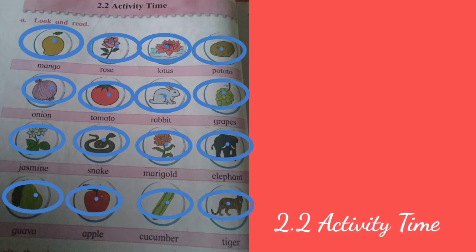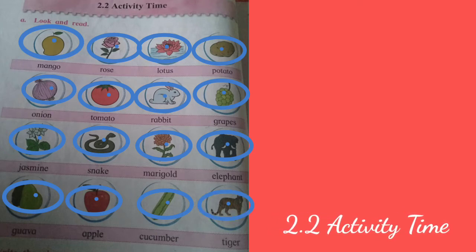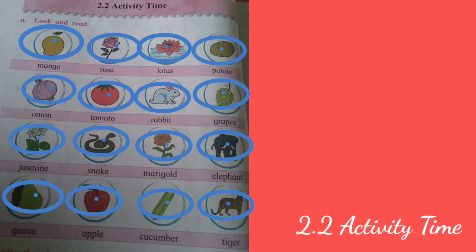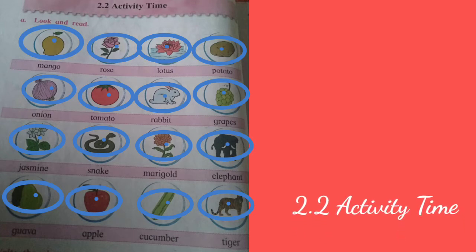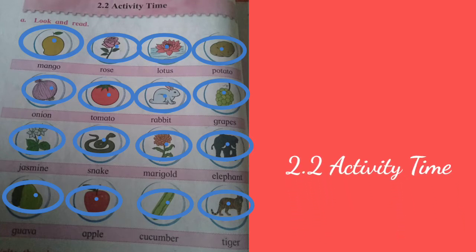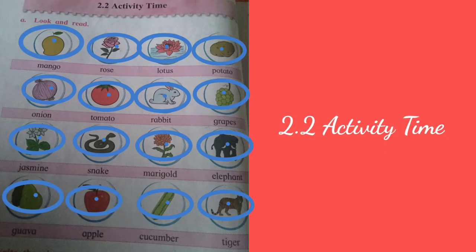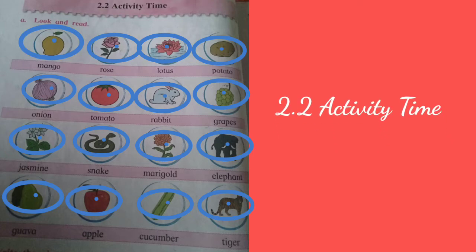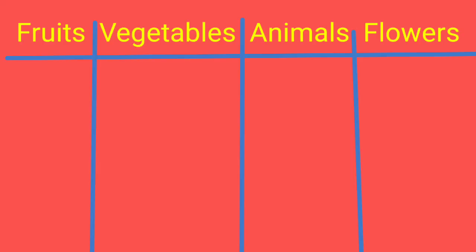Here some are fruits, some vegetables also and animals and flowers. Now make a group of these naming words as per the fruits, vegetables, animals and flowers. Mango is fruit.